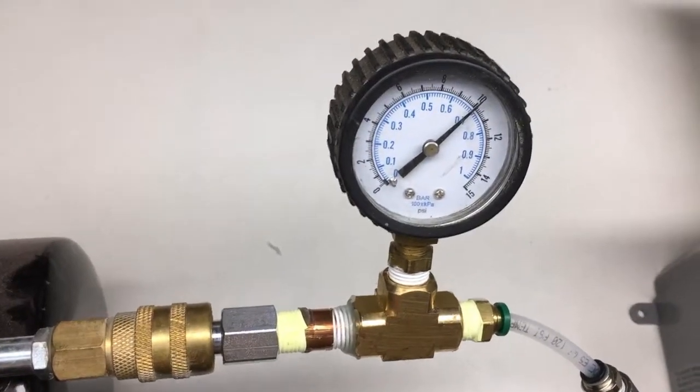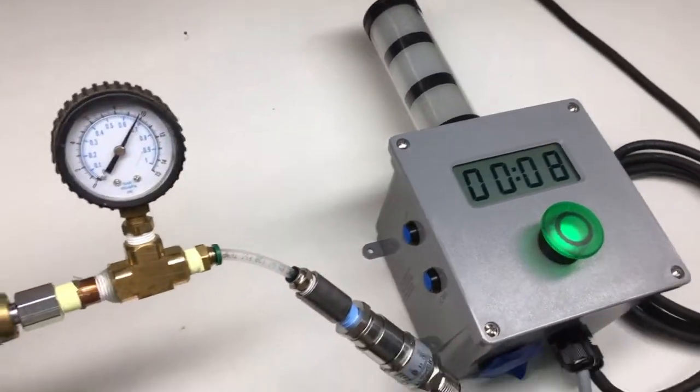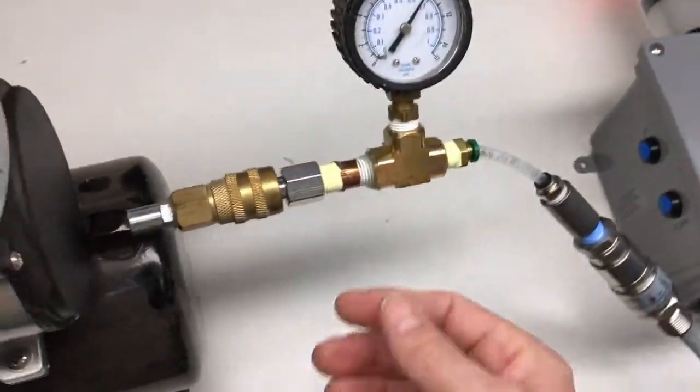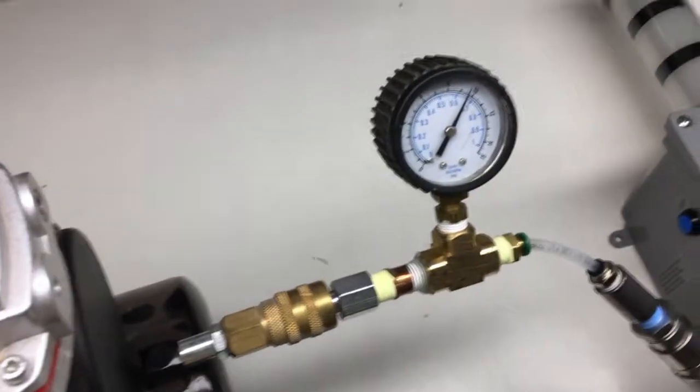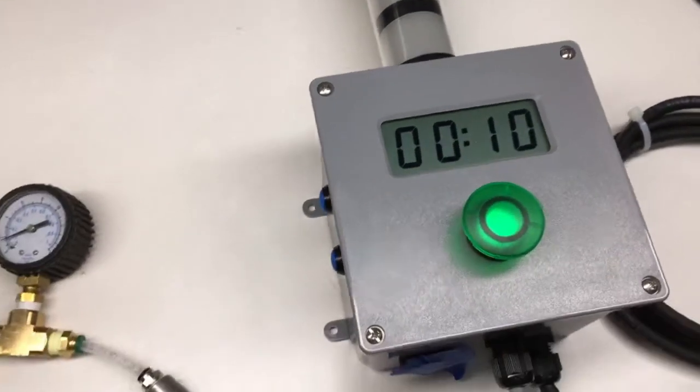Here we're still at 10 psi so I'm going to relieve. There's no way to turn it off except with the pressure switch so I'm going to disconnect the pressure. Now the pressure is down to zero and that turned off the alarm.